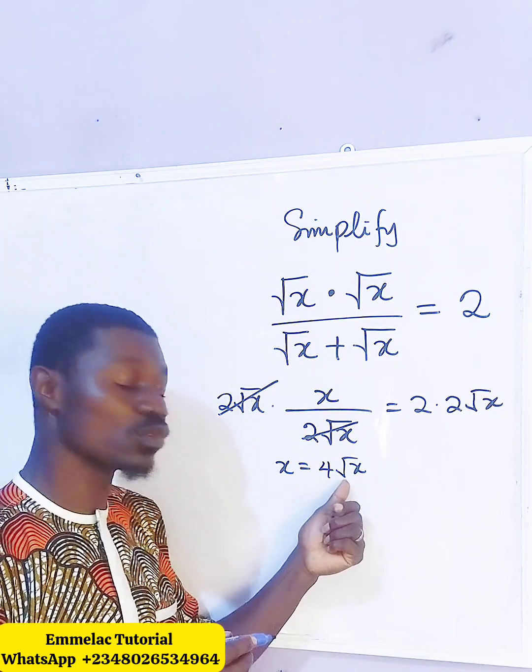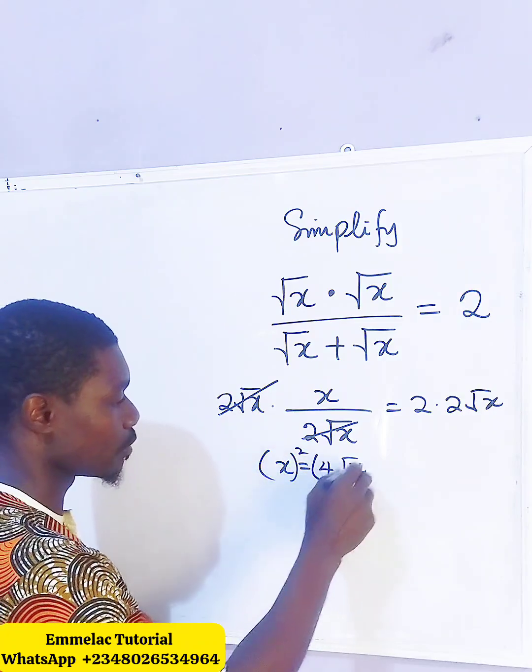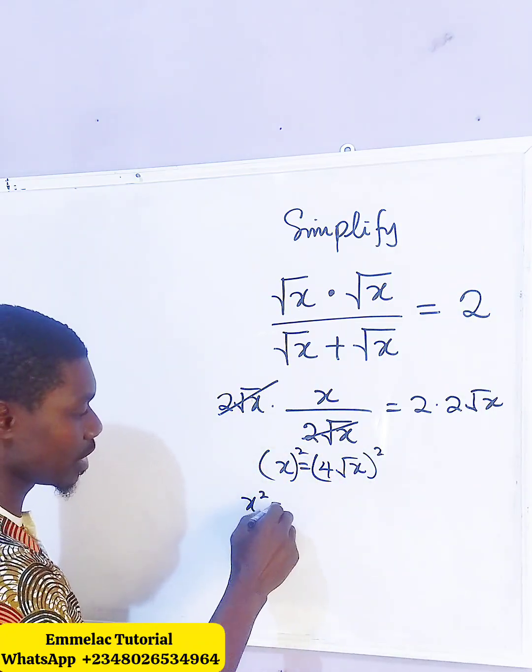At this point, for us to undo this square root here, let us raise both sides to the power of 2. So here we have x squared then equals...